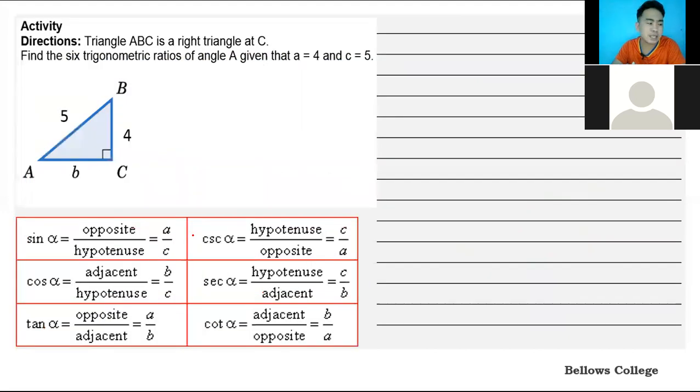Let's solve. Triangle ABC is a right triangle at C. Find the six trigonometric ratios of angle A given that side A is 4 and side C is 5. Here we're given two side measures of the right triangle, A and C, and our focus is angle A.